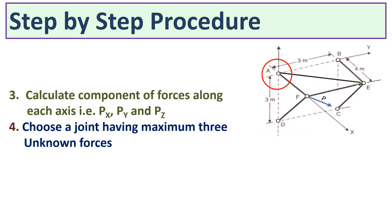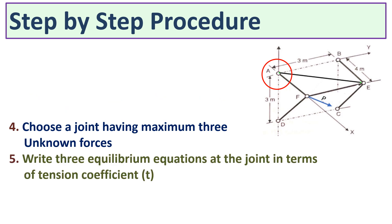The next step is to choose a joint having a maximum of three unknown forces. Here we look for joints that are in space. Joints E and F are in space. At joint E there are four members meeting, whereas at joint F there are three members: FA, FD, and FE. So we solve joint F first, then joint E.